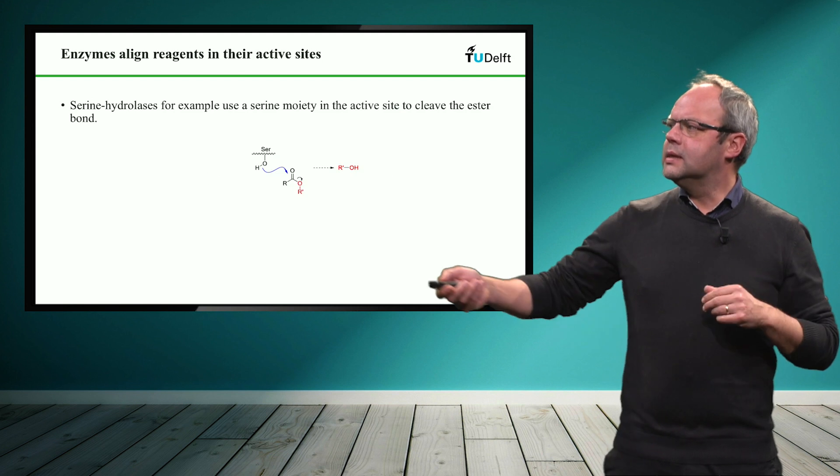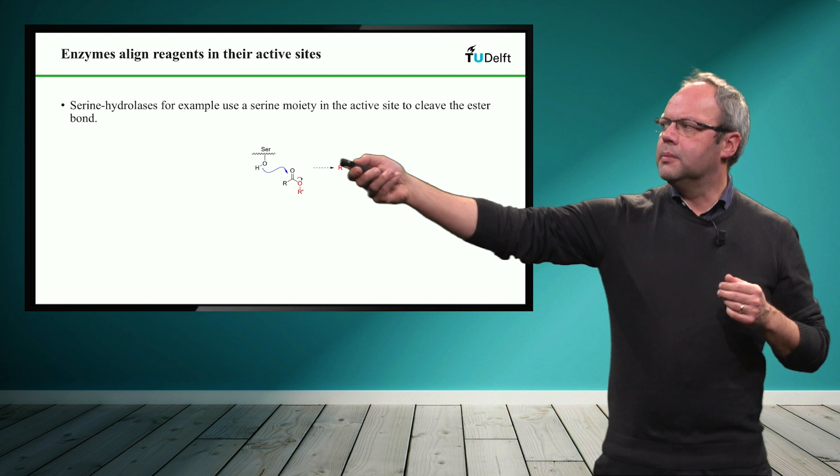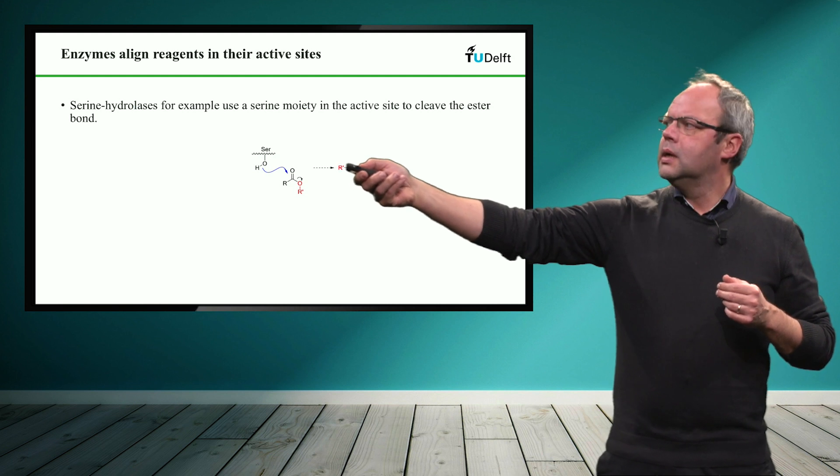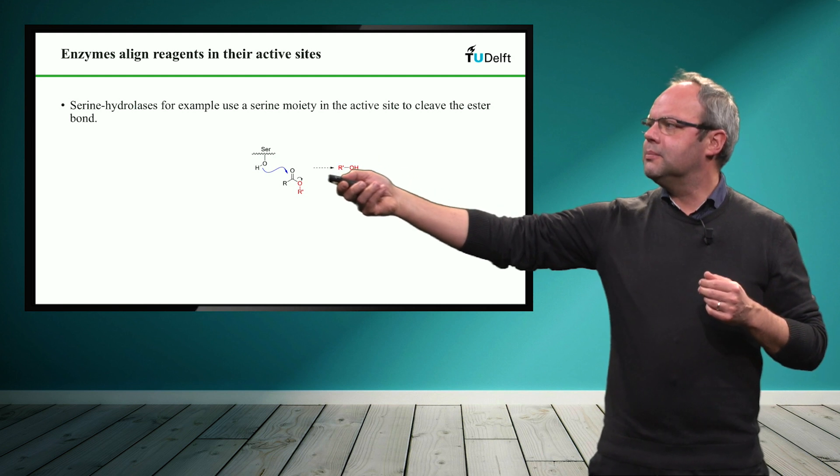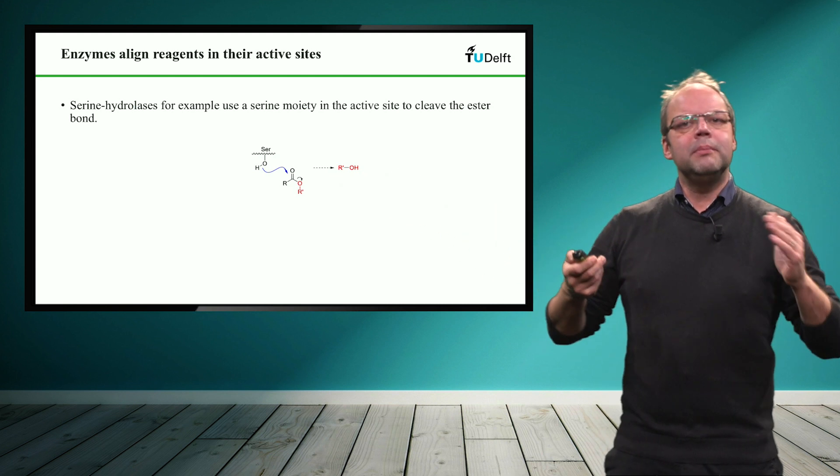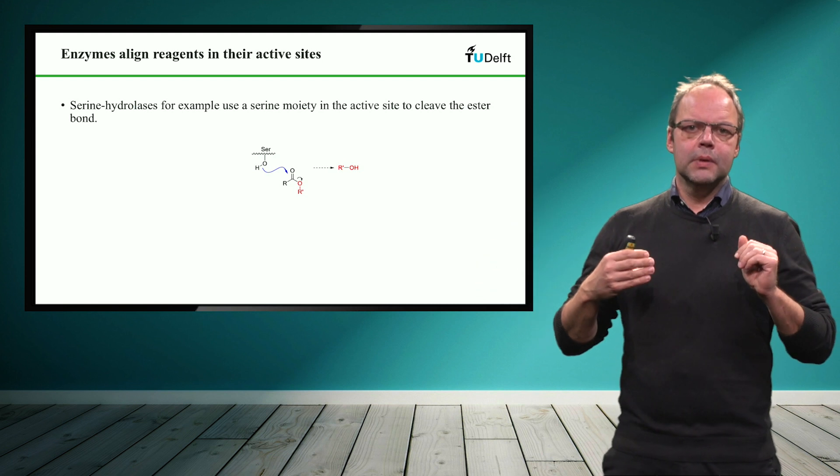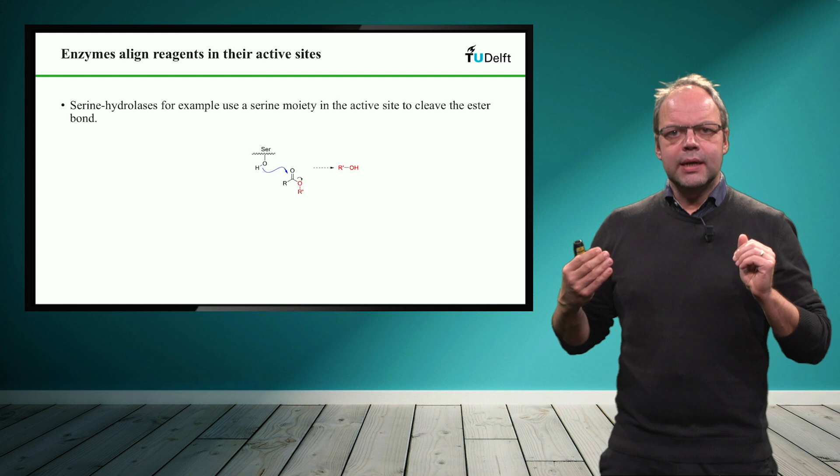Well, the strategy is they use a so-called catalytic serine that you see up here. This is basically an alcohol and this alcohol attacks the carboxylate group and throws out the alcohol group and makes a new ester between the acid group and the enzyme. So this is the catalytic strategy.